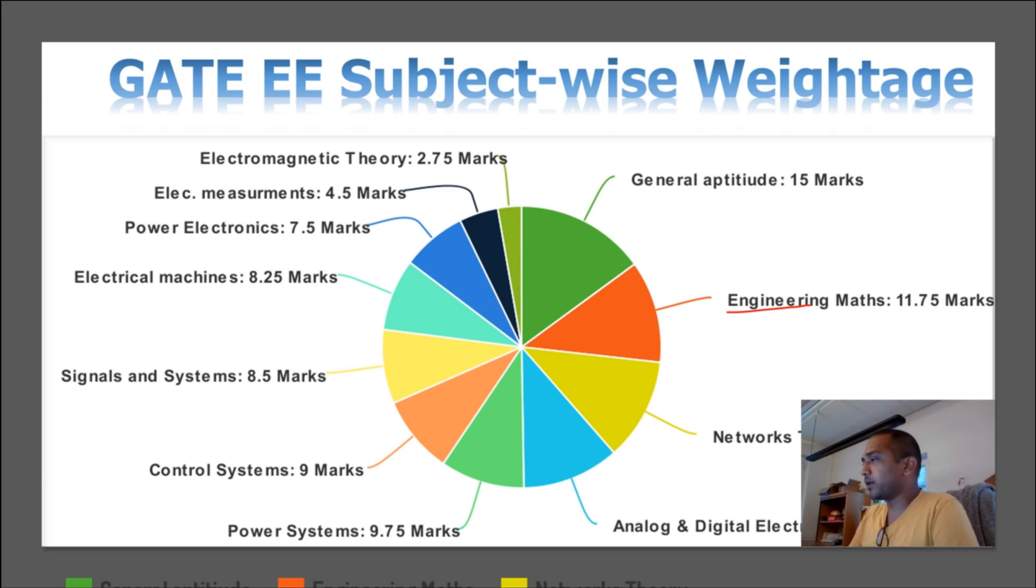And then you have networks theory, that is the circuit analysis, appearing for 12 marks again. And then you have analog and digital electronics appearing for 12 marks. Then you have power systems, which is appearing for around 10 marks, and then you have control systems appearing for 9 marks, signals and systems 9 marks.